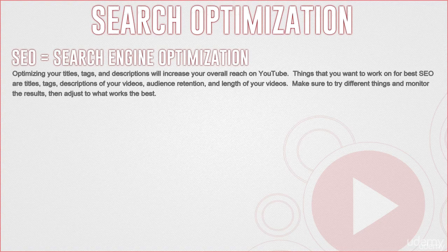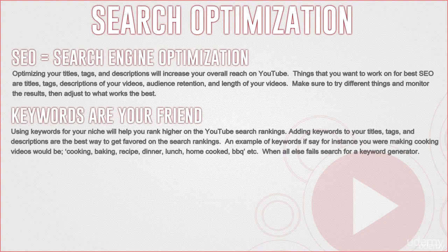That way, YouTube will be able to pick those up, nitpick through your channel and your descriptions, your titles and your tags, and get a sense of what your channel is all about. Then they will place you in their rankings depending on what your video is going to be about. It's kind of an art to get the hang of it, so you will have to play with it quite a bit. Once you do the title and the description, you will work on the tags.